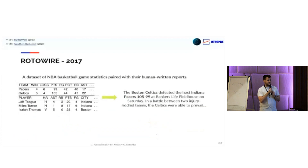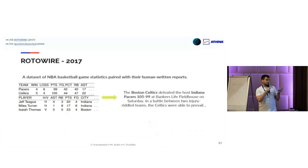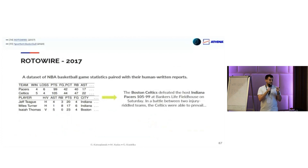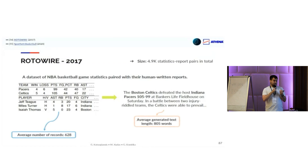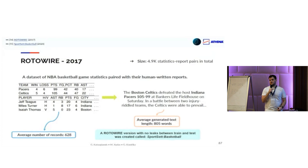On the other hand, we have the Rotowire dataset, a much more challenging dataset. It has NBA basketball game statistics, with a lot of records about how each player and team performed. Ideally, we would pass that through a model and get back the actual article written by a journalist, focusing on the most interesting parts of the statistics. It is really challenging because there is a lot of information — on average 628 records for a single game — and the generated text is pretty long at 800 words. Even today's models will struggle to generate such lengthy reports. A newer version called Sports-Set Basketball has also been created, which fixes a data leak between the train and test sets.